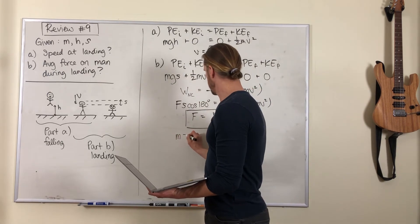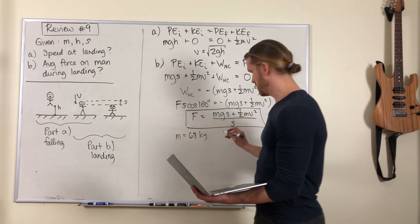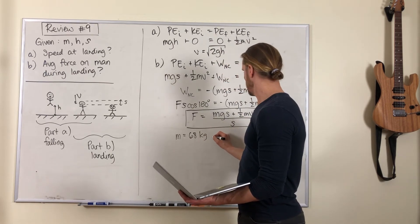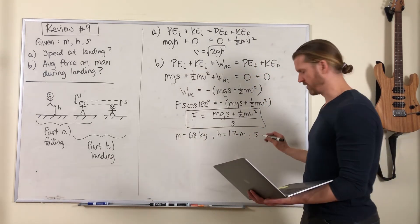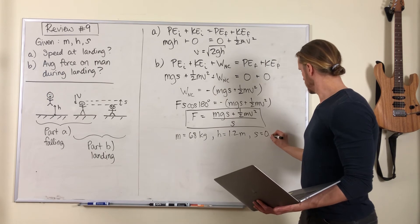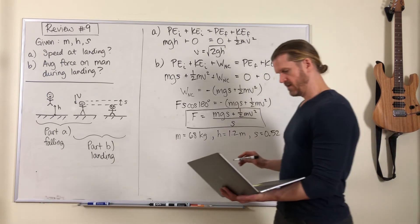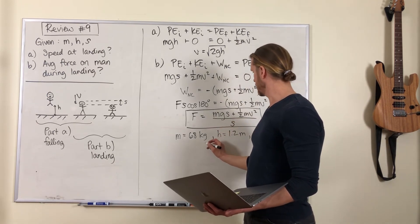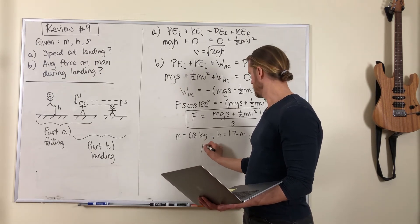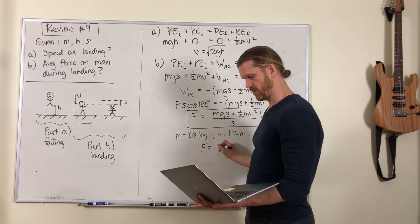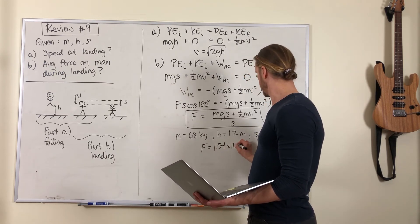My example: for the mass I had 68 kilograms, the height was 1.2 meters, and the compression distance was 0.52 centimeters. When you plug in all that, you get a force of 1.54 times 10 to the 5th newtons.